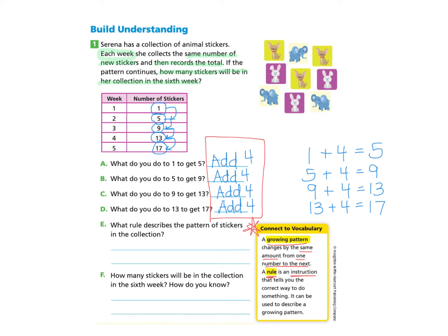Part E. What rule describes the pattern of stickers in the collection? So if we're looking at what we did to each number each week, we saw that we are adding 4 every time. So this would become our rule. Our rule would be to add 4 to find the number of stickers for the next week.